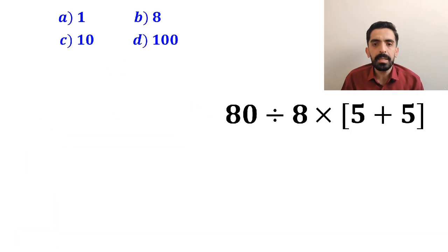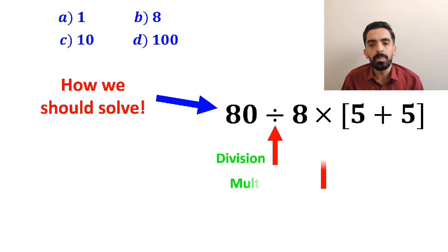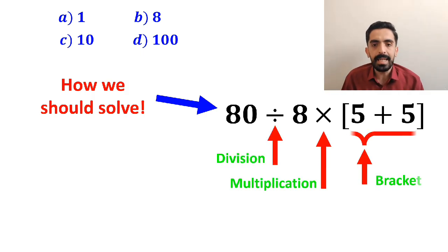Now let me explain step by step how we should solve this expression properly. As you can see on the screen, in this expression, we have a division sign, followed by a multiplication sign and then a bracket.